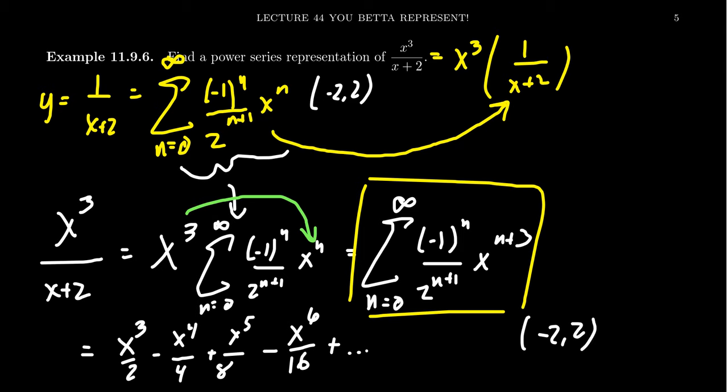This is because x³, if we think of it as a power series, is a power series where the coefficient sequence is always 0 except for the third spot. Its interval of convergence will be the entire real line. So when we put these two power series together, we take the intersection of the intervals, which just gives us this one, (-2, 2).